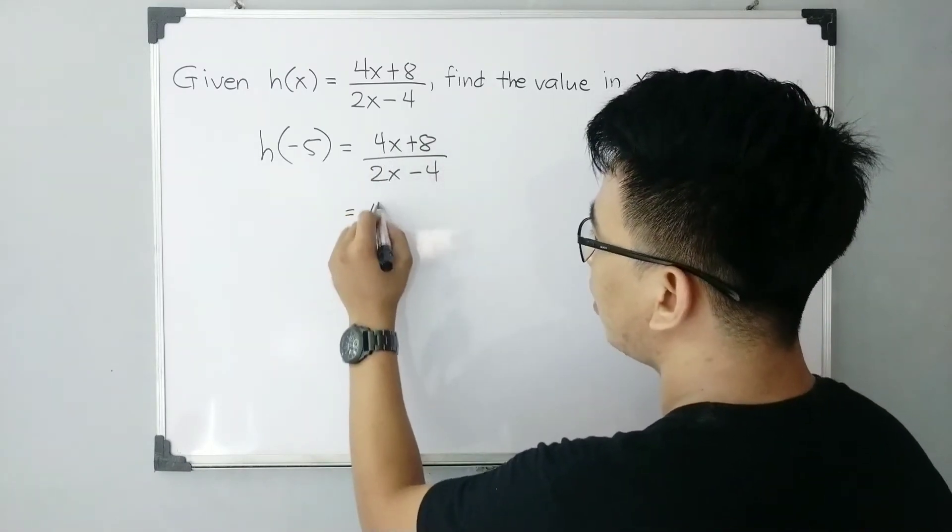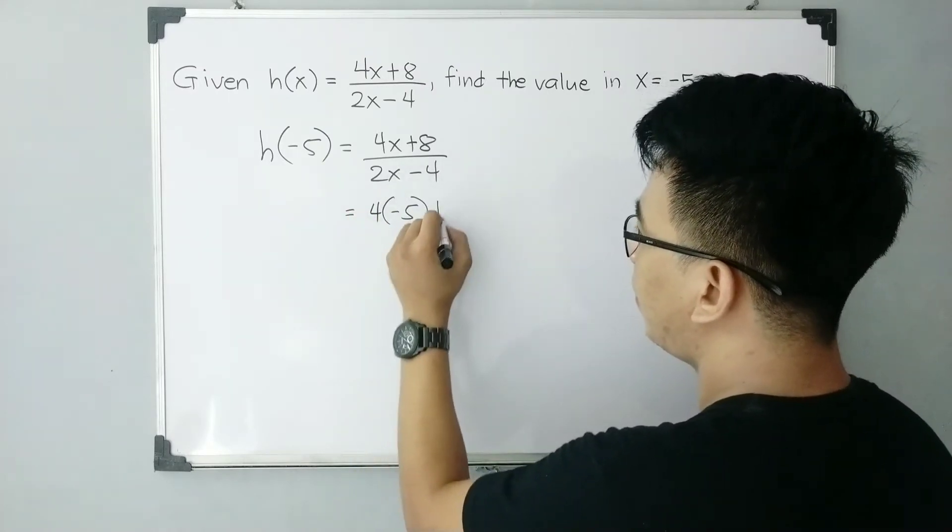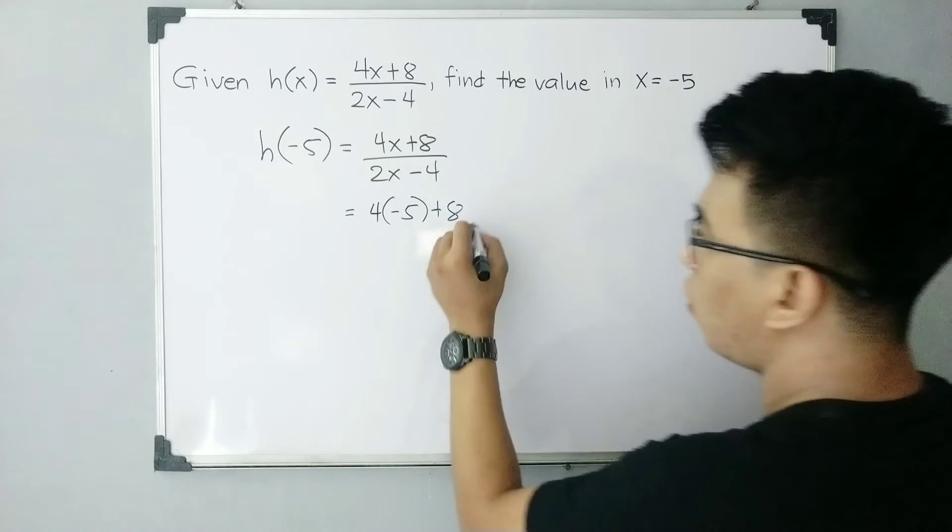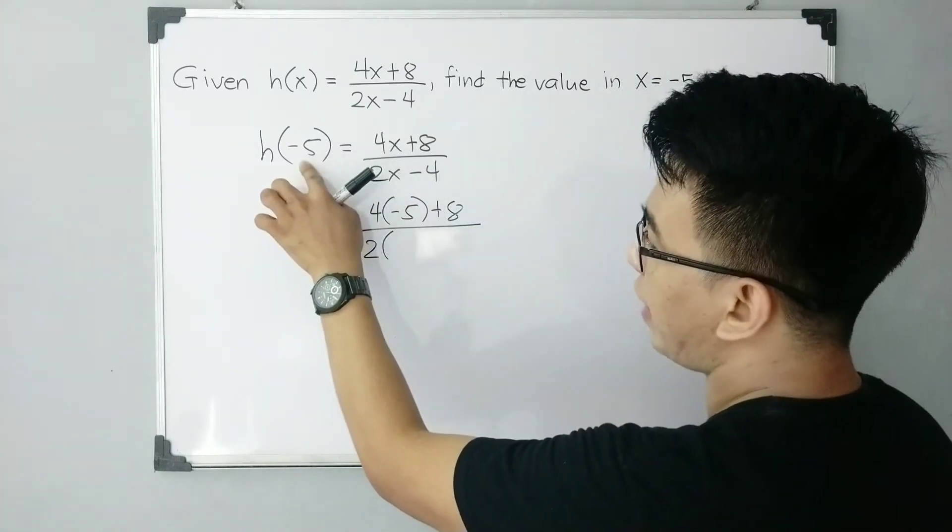So what we will do is we will replace 4 and your x will become negative 5 plus 8 over your 2 times. Since your x is equal to negative 5, we can replace it by negative 5 minus 4.